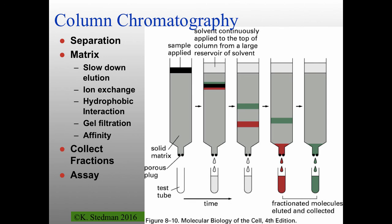For chromatography: you have a column with a solid matrix that slows elution of different proteins. A mixture of proteins — shown as black — slowly separates, with green held up more than red. You collect fractions from the bottom at different times, ending up with separated proteins. This applies to ion exchange chromatography, size exclusion chromatography, and affinity chromatography — all about separating proteins based on whatever the matrix is. Gel filtration: bigger molecules go through faster than smaller ones.